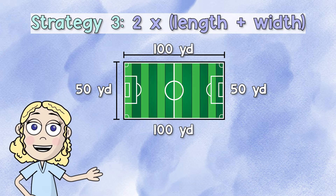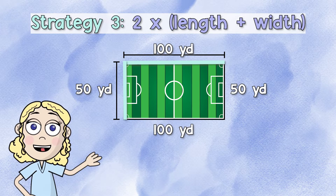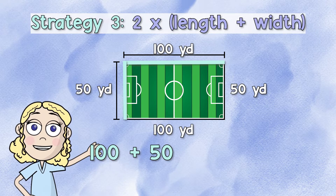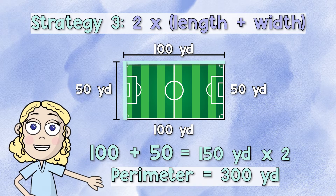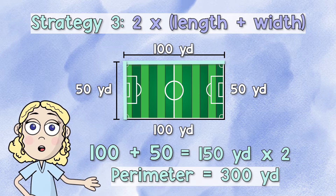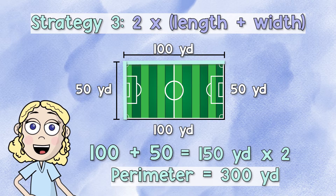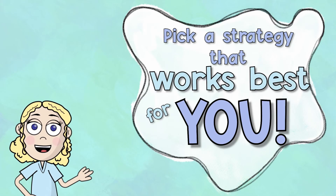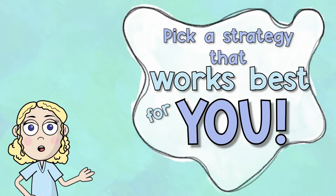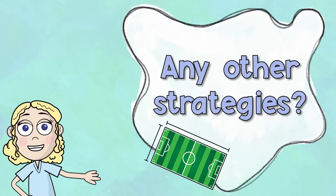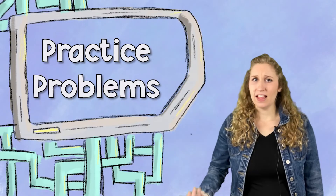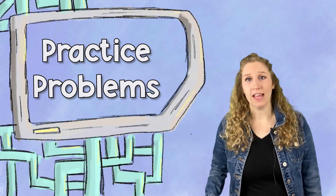There's actually a third way to find perimeter too. You can add the length and the width of the rectangle and then multiply by two. That's the best part about math — you can find a strategy that works best for you. Do you think there are any other strategies to find the perimeter of a rectangle? Let's try a few together.